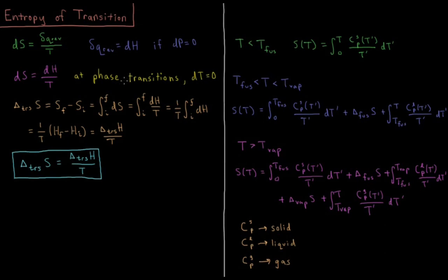At phase transitions, the change in temperature is going to be equal to zero — the temperature remains constant while substances change from solid to liquid, liquid to gas, etc. The reversible heat that occurs during a constant pressure process is dh, so ds during a phase transition is equal to dh over T.